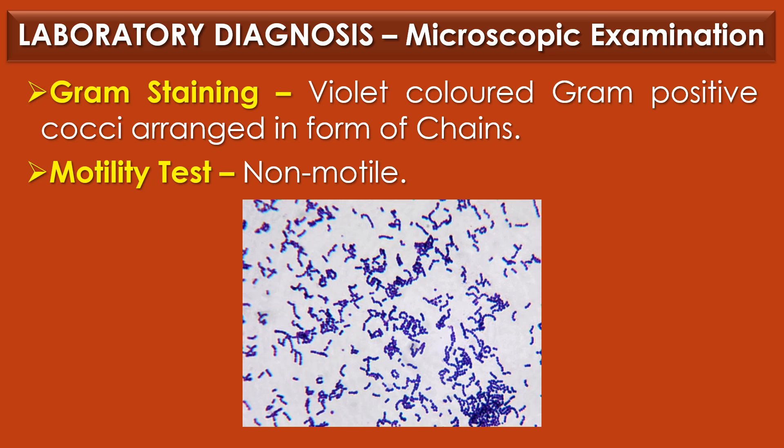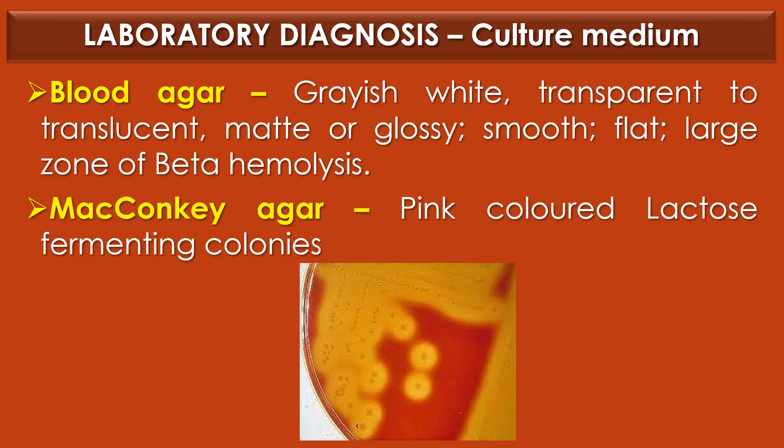Laboratory diagnosis of Streptococcus pyogenes: The first diagnostic method is microscopic examination. Under gram staining, Streptococcus pyogenes appears as violet-colored gram-positive cocci arranged in chains. In the hanging drop method (motility test), it is non-motile. On blood agar, it produces grayish-white, transparent to translucent, matte to glossy, smooth, flat colonies with a large zone of beta-hemolysis. On MacConkey agar, it shows pink-colored lactose-fermenting colonies.